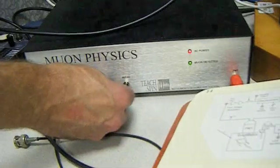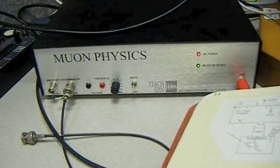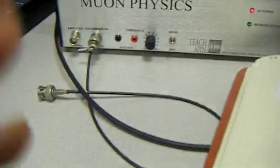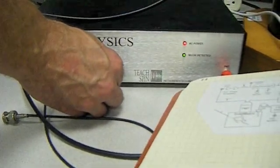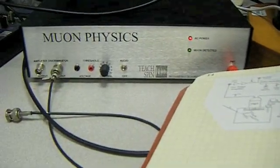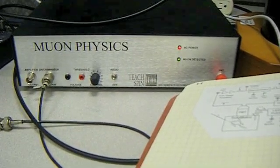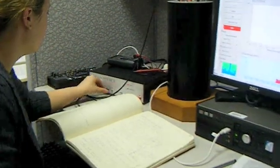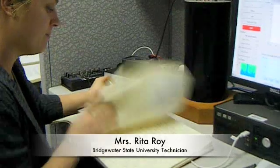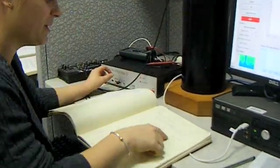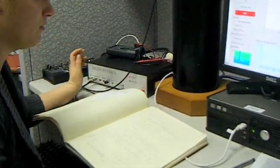Essentially, when you're here, you're letting every muon through and you're getting accidental counts. So what you do is, as you turn up the discriminator, you're discriminating — that's more control. And what we're doing is really figuring out which muons are the real muons we're interested in. So we set our voltage threshold to what the lab told us to, discriminating between 180 to 220 millivolts.